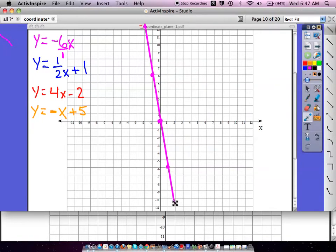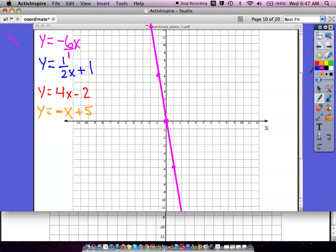Anything on this line will fit that equation just fine. There's the line - that should be the first one. Second one is positive, so we know the line is going to be going this way. We're going to start at plus one.